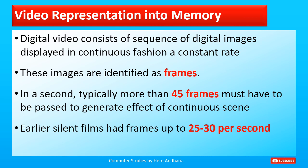The last topic is video representation in computer memory. Digital video consists of a sequence of digital images displayed in a continuous fashion at a constant rate. These images are identified as frames. In one second, typically more than 45 frames must pass to generate the effect of a continuous scene. For example, when you are walking in a video, 45 different images are captured per second, and these frames pass so fast that it creates an illusion of moving pictures.